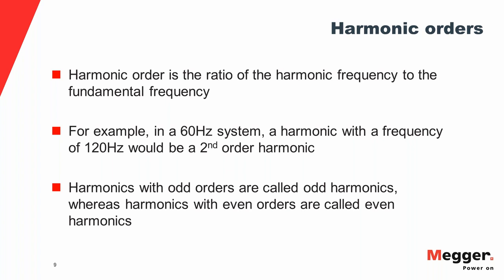The terms '20% third harmonic' and '20% fifth harmonic' refer to harmonic orders. Harmonic order is the ratio of the harmonic frequency to the fundamental frequency. A third harmonic means the frequency is three times the fundamental — 180 Hz in a 60 Hz system. A fifth harmonic is five times 60, which is 300 Hz. Harmonics with odd orders — third, fifth, seventh, ninth, eleventh — are called odd harmonics. Harmonics with even orders — second, fourth, sixth, eighth, tenth — are called even harmonics.